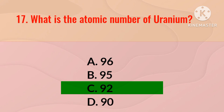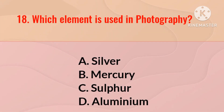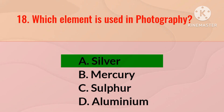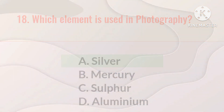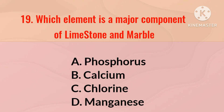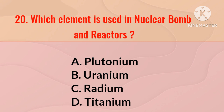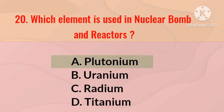What is the atomic number of uranium? The right answer is 92. Which element is used in photography? The right answer is silver. Which element is a major component of limestone and marble? The right answer is calcium.